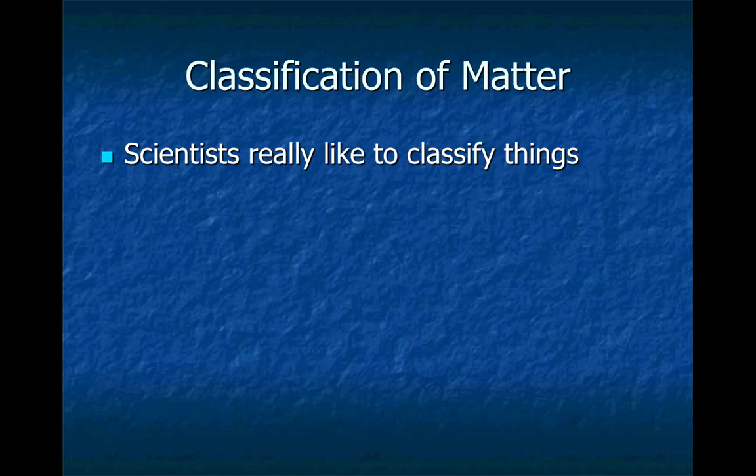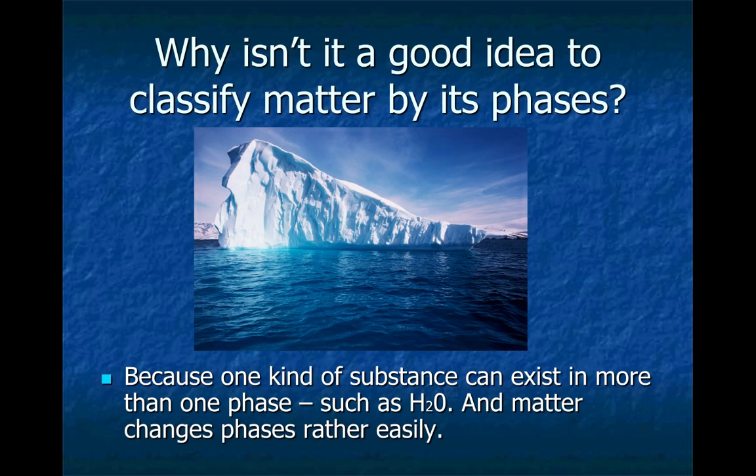Classification, because scientists really like to classify things. We classify things because we like to try to understand them, and if we see something new, we want to learn about its identity. And we do that through classification. One way that wouldn't be a great way to classify things would be through its phases. And the reason we don't use phases to classify things is, for example, water. Water exists on the surface of the Earth in three different phases: solid, liquid, or gas. So just because it's a gas doesn't mean that that gas is going to be like every other gas. So we definitely don't classify by its phase.